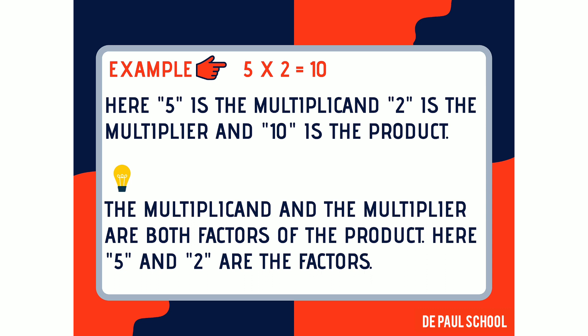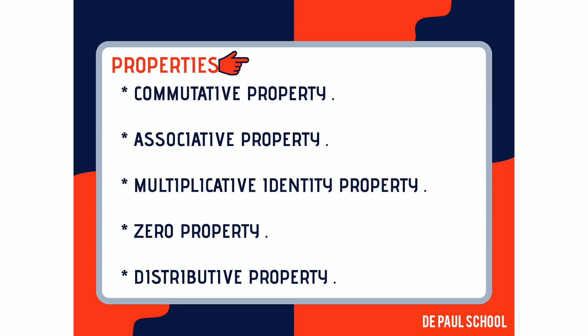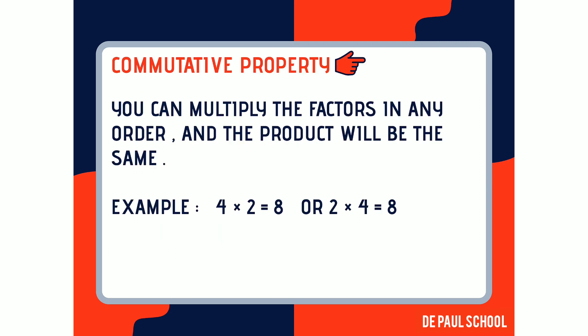Now children, let us learn about the five different properties involved in multiplication, which make our problems easier to solve. The first property is the commutative property, second is associative property, third is identity property, fourth is zero property, and the fifth is distributive property. Let me explain each property one by one.